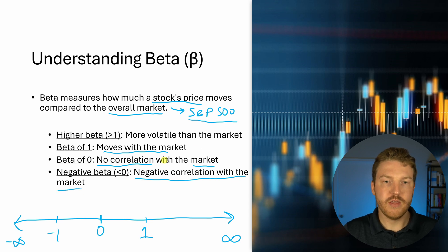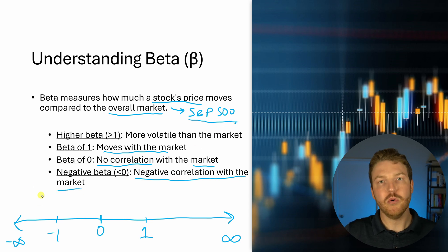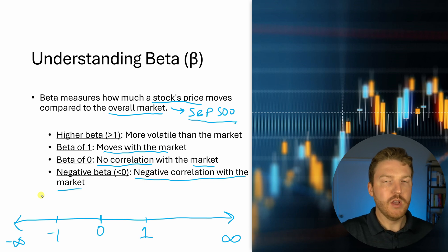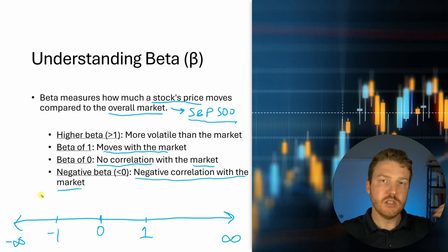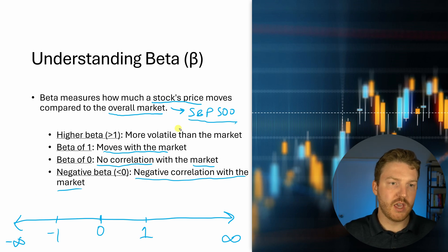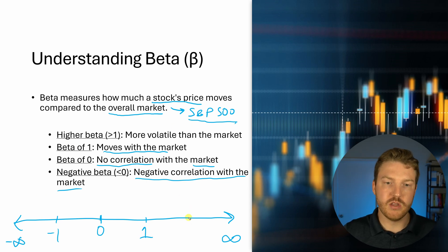So when the market or the S&P 500 goes up, we would expect the stock to probably go down and vice versa. If the stock market goes down, then we expect this specific stock to go up. And then finally there's the case of a beta higher than one — we could use two as an example.